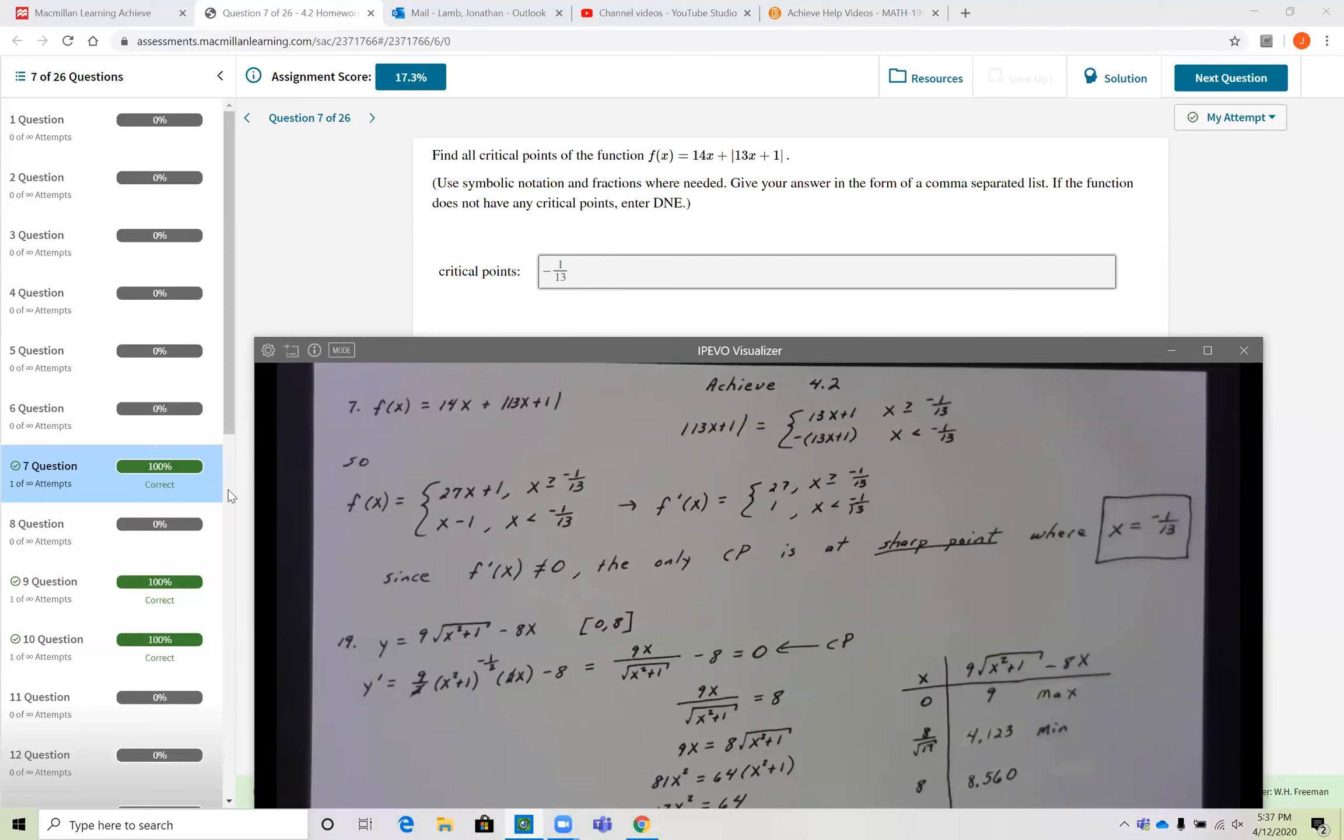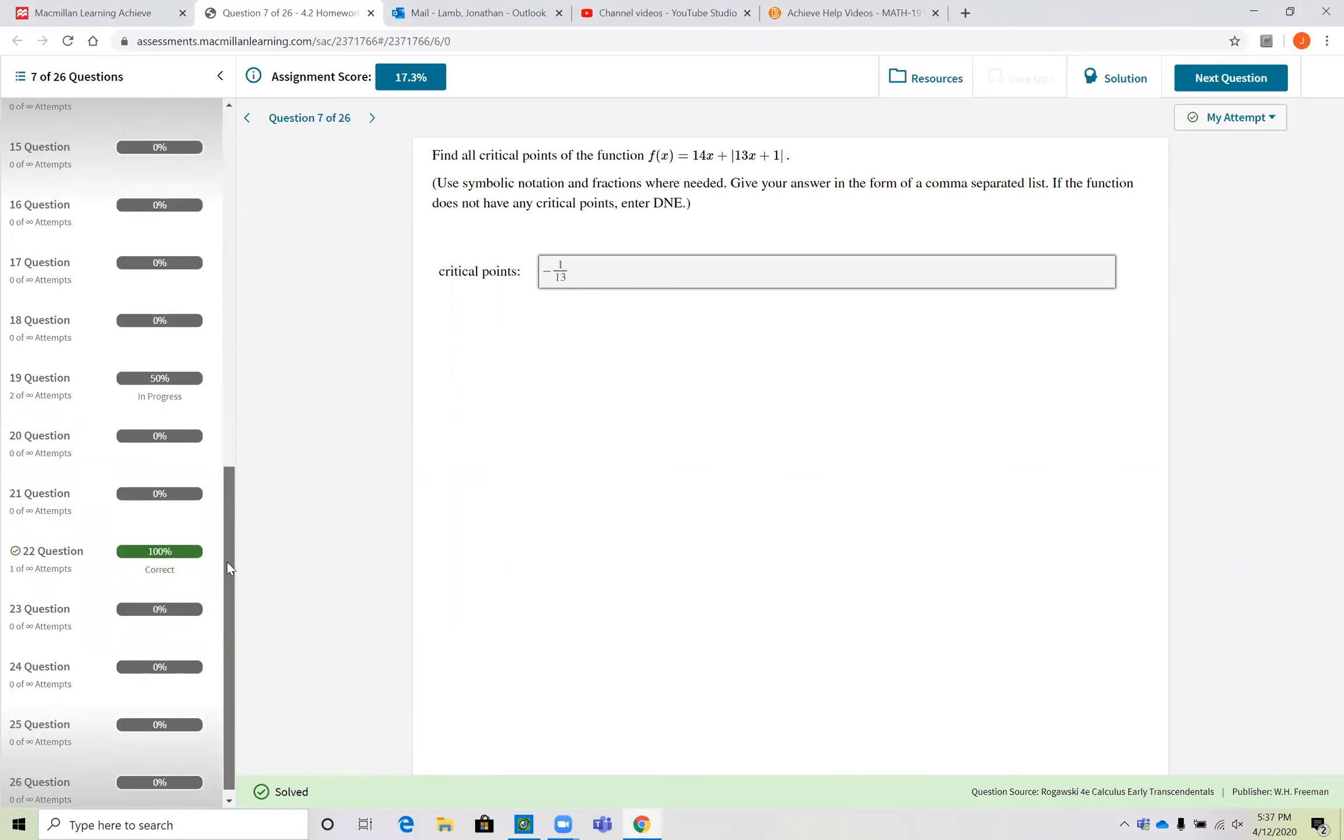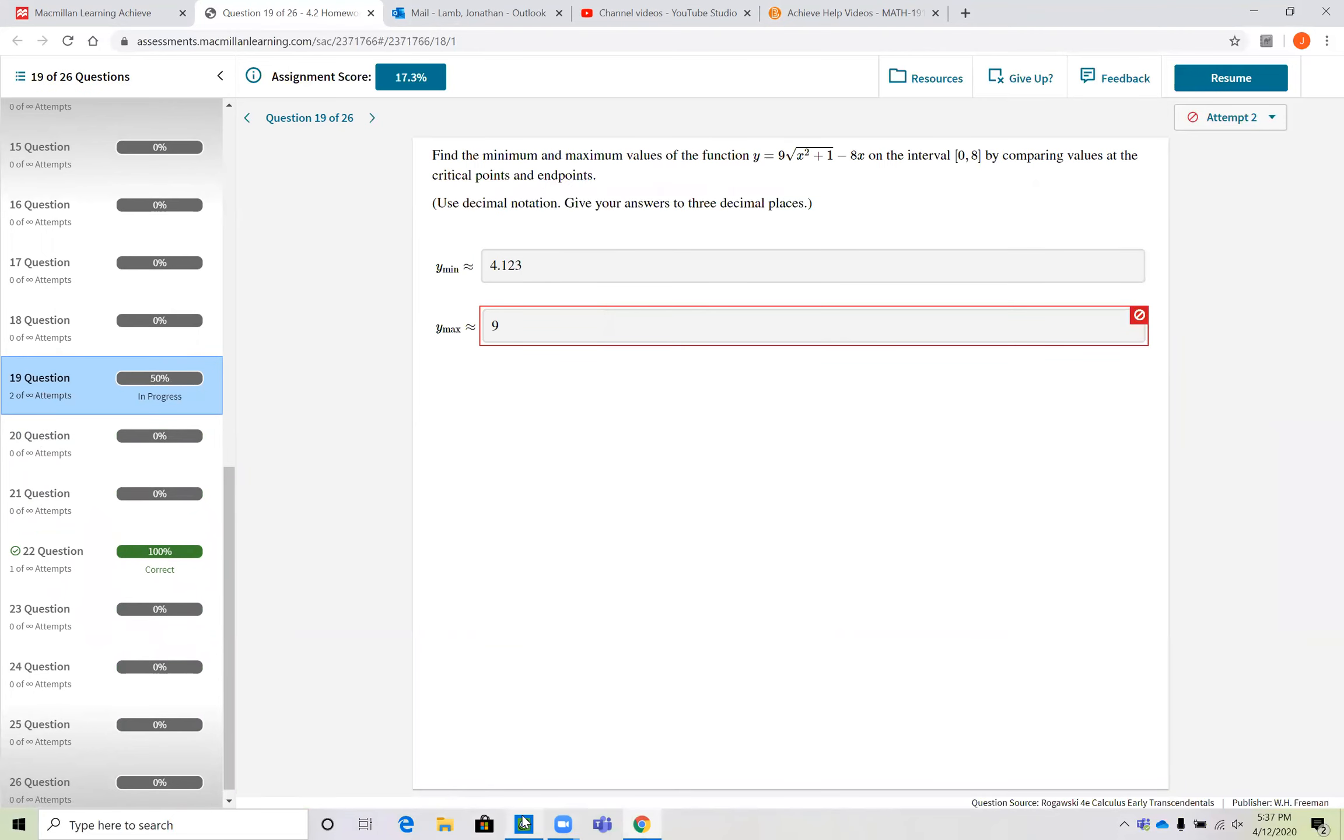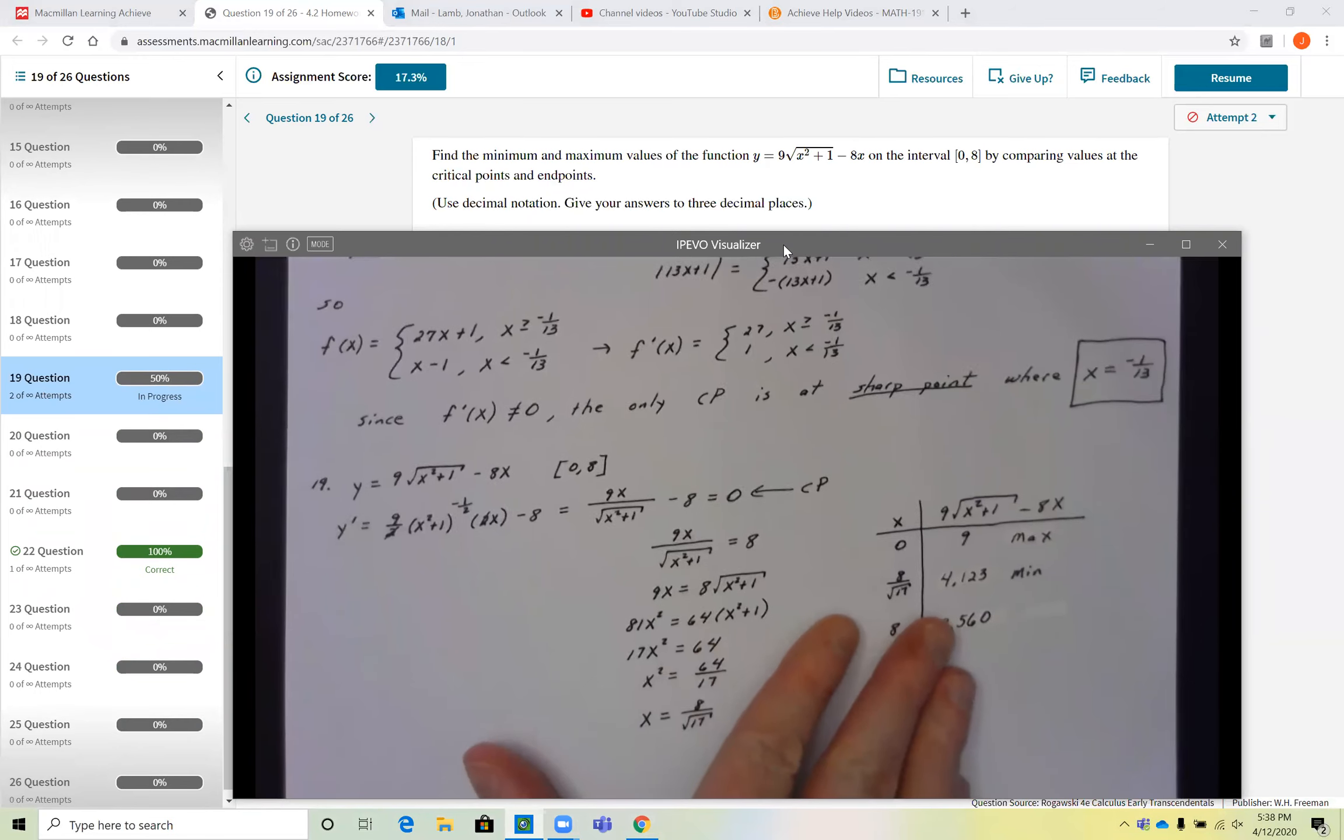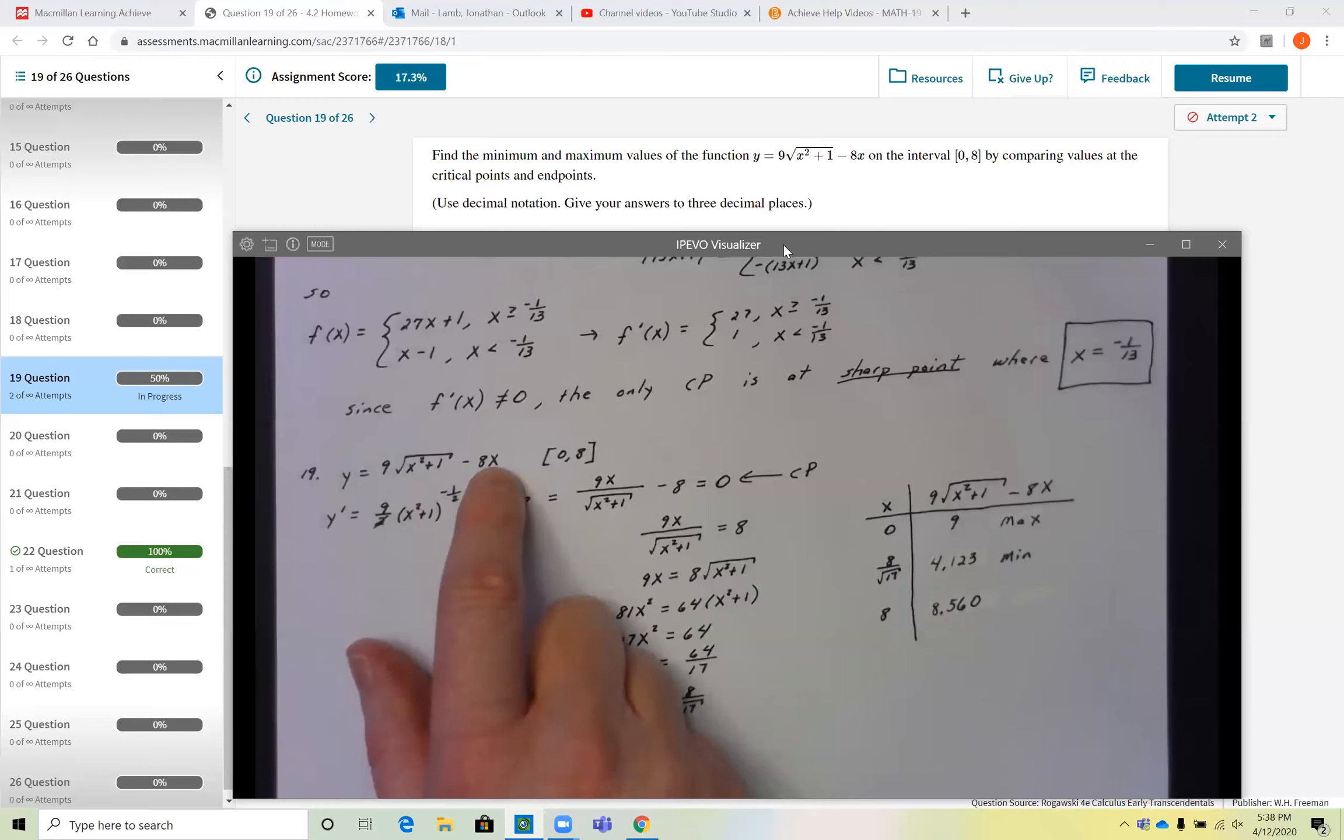Now, let me talk to you about the next one. Number 19, I'll have to report this problem. It does have an error in it. And let me talk to you about that error. I was right. It's wrong. So it's saying I'm wrong. I promise you I'm not wrong. Let's talk about why. So the problem it gave me is y is equal to 9 times the square root of x squared plus 1 minus 8x. And we're supposed to find the maximum and minimum values on the closed interval 0 to 8.